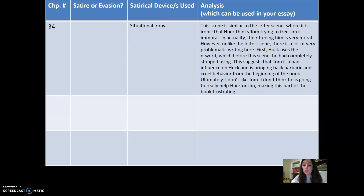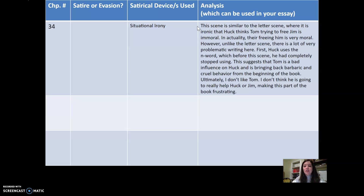We know already in this book that we have a lot of situational irony — it's one of the primary tools that Mark Twain uses. This scene is similar to the letter scene, where it is ironic that Huck thinks Tom trying to free Jim is immoral, when in actuality their freeing him is very moral.